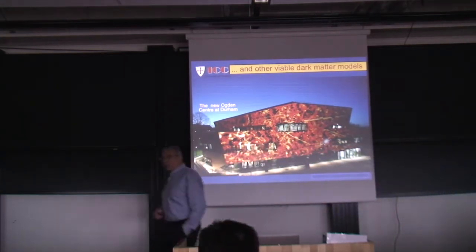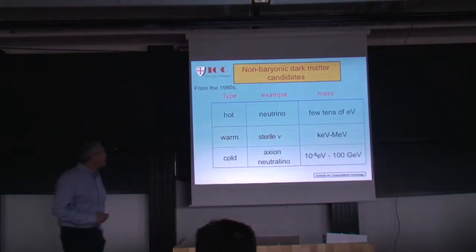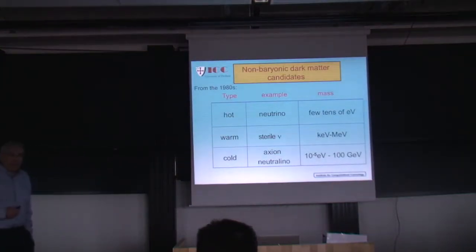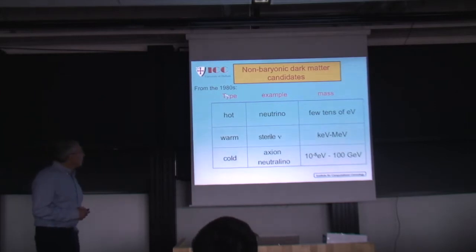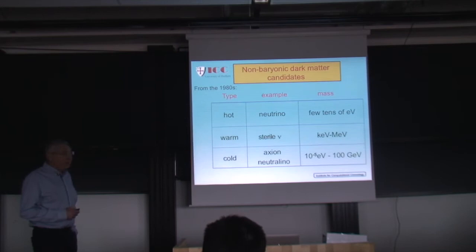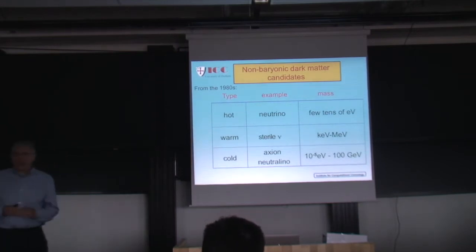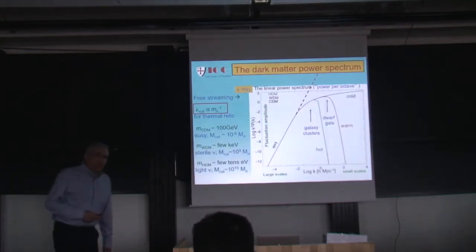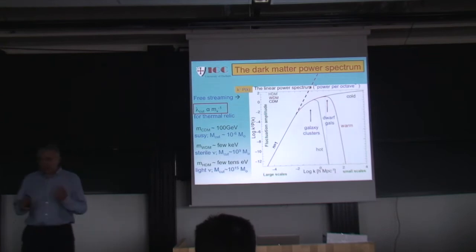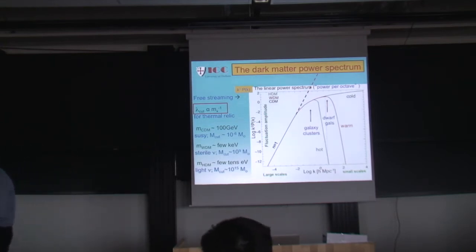Let me give you a brief review of how we got to where we are today. When the idea that the dark matter might be non-baryonic was proposed in the late 70s and early 1980s, it was immediately realized that regardless of the details of the particles and the masses, it could be classified into three distinct families: hot, warm, and cold. The names just come from the effects of thermal motions in the power spectrum that comes out of inflation.